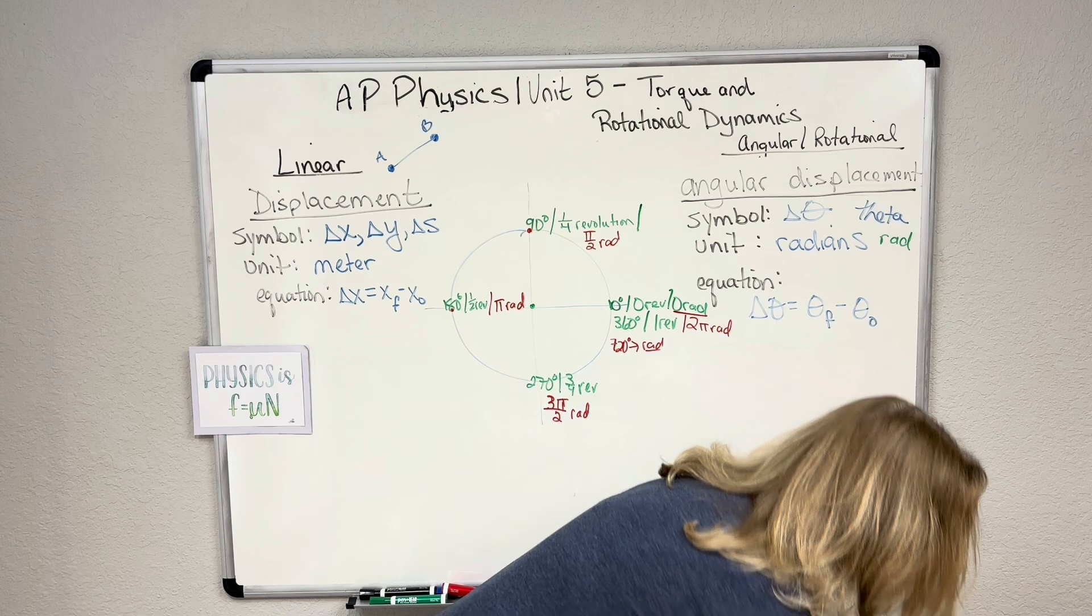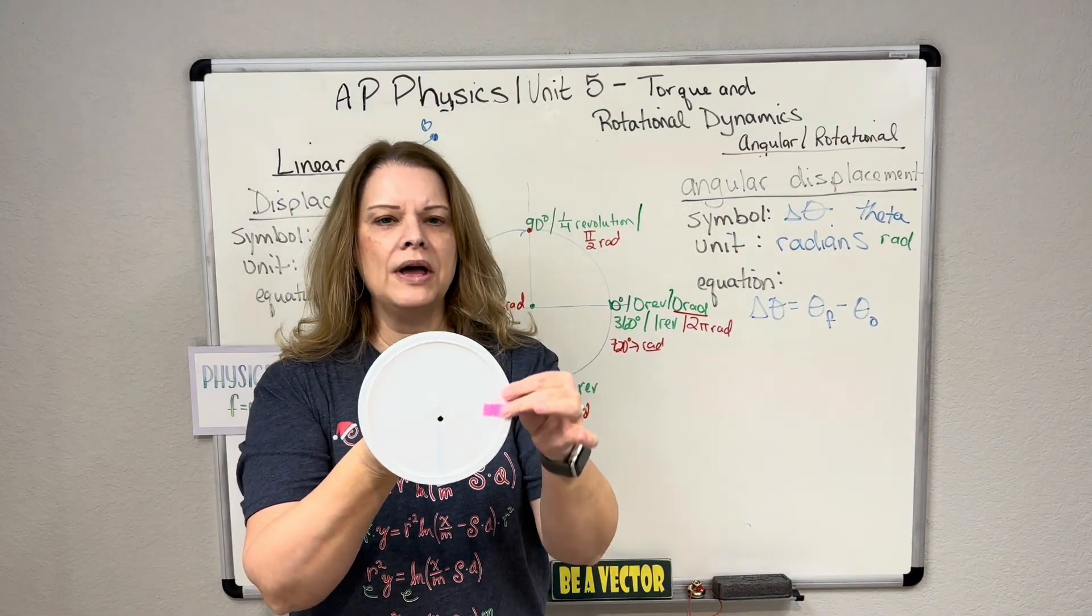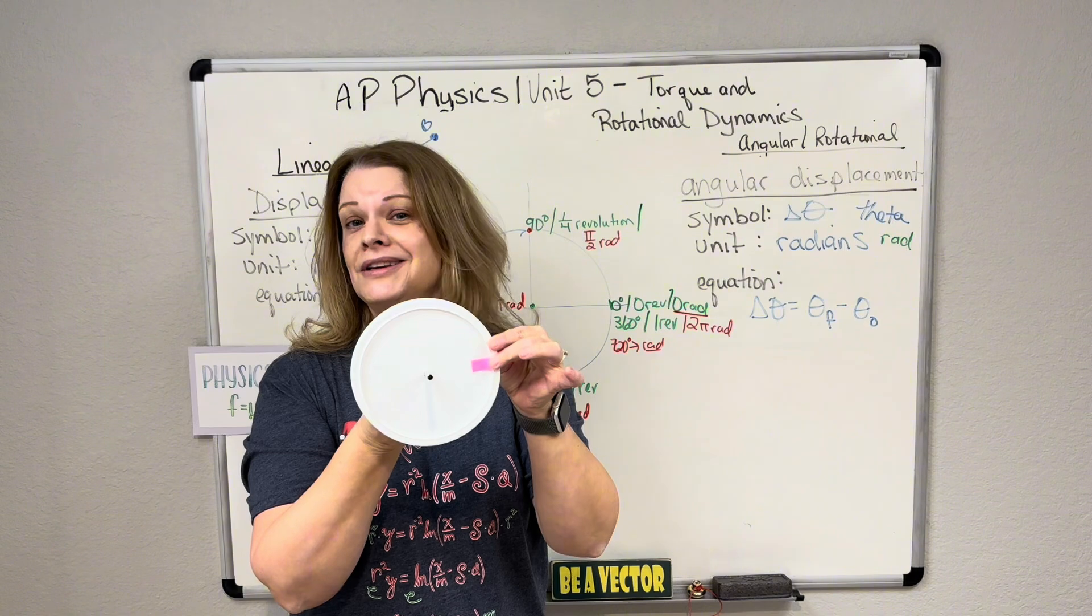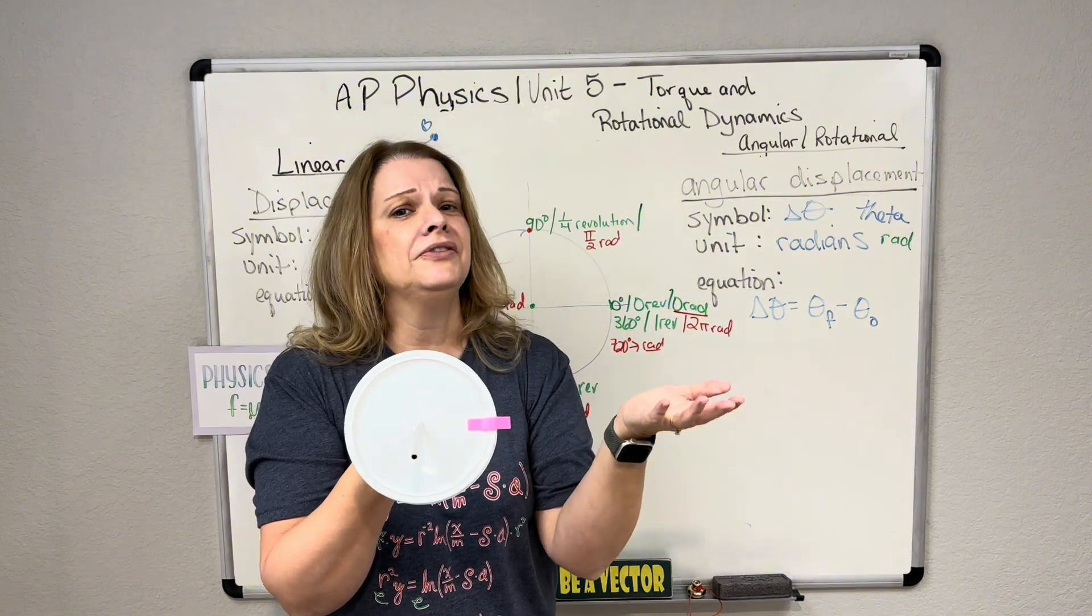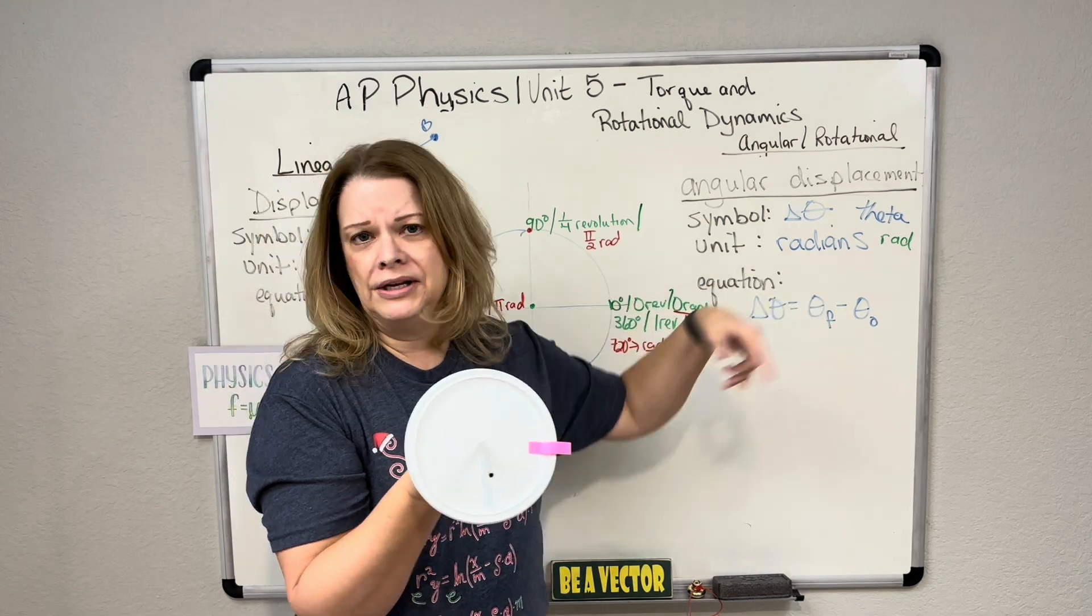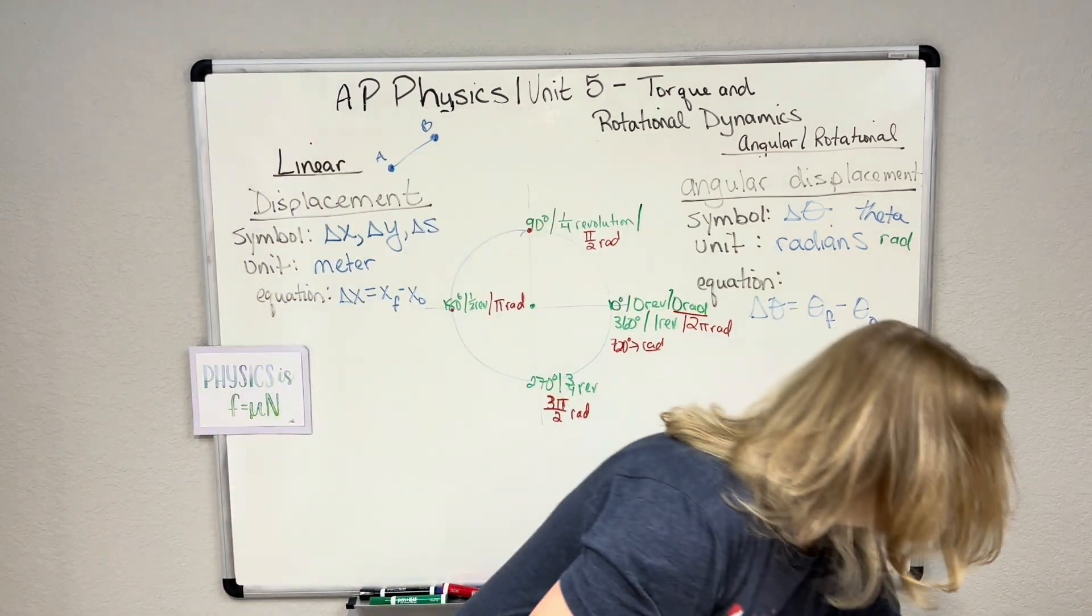So in other words, if I go back to my demo, I'm here. I go around once. That's one revolution. That's 360 degrees. That's two pi radians. It's just three different ways to say the exact same thing. We need it in radians, though, for the problems.